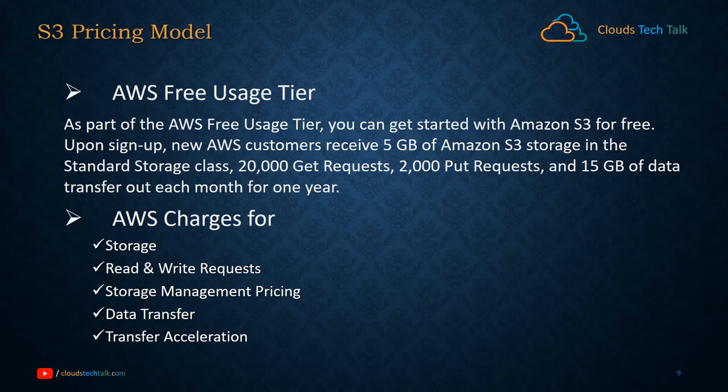Now let's talk about the S3 pricing model. First, the AWS Free Tier: as part of the AWS Free Tier, you can get started with Amazon S3 for free. Upon sign up, new AWS customers receive 5 GB of Amazon S3 storage in the standard storage class, 20,000 GET requests, 2,000 PUT requests, and 15 GB of data transfer out each month for one year.